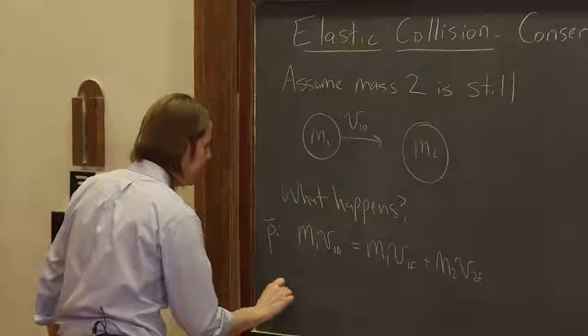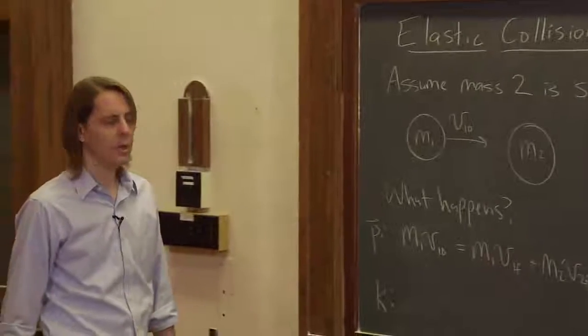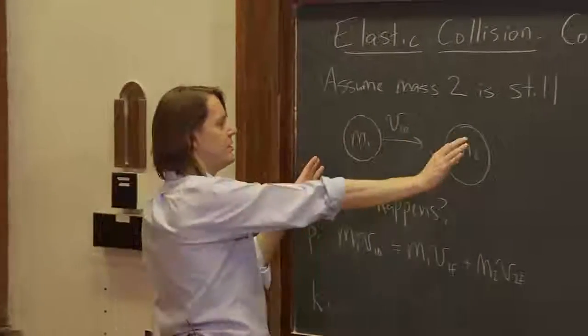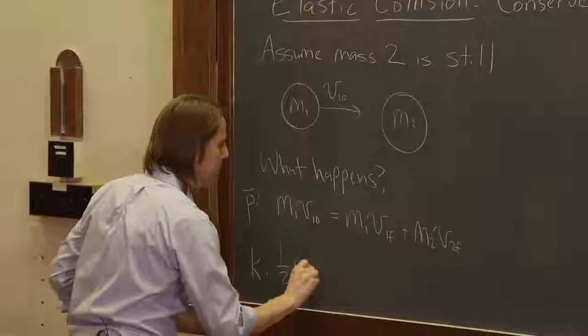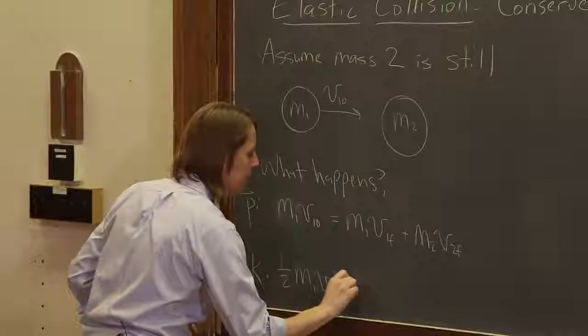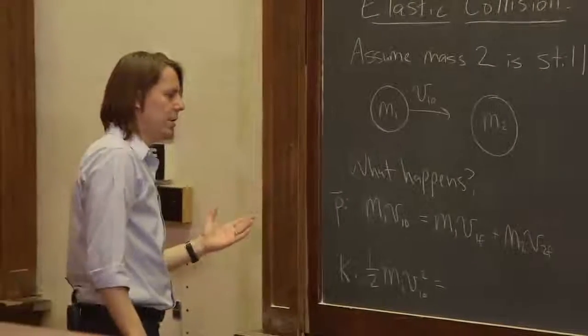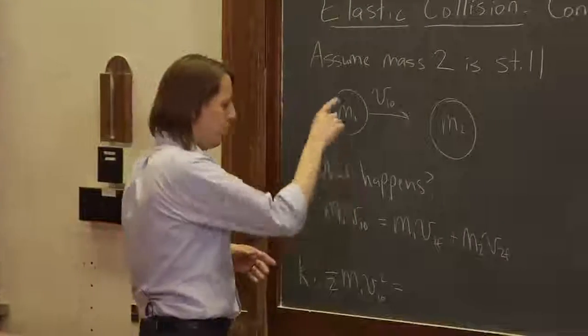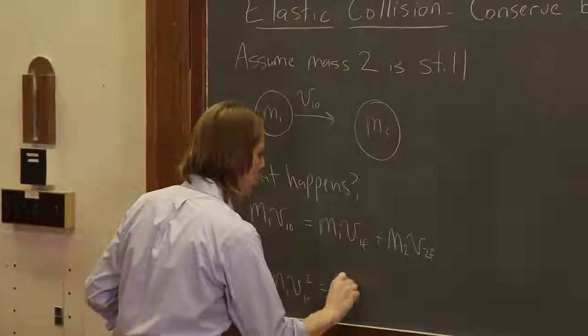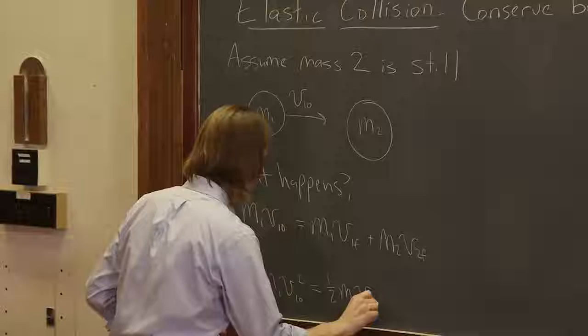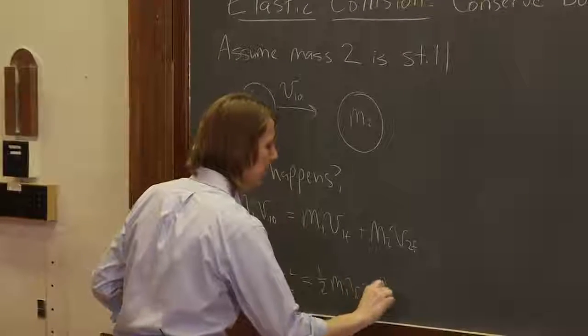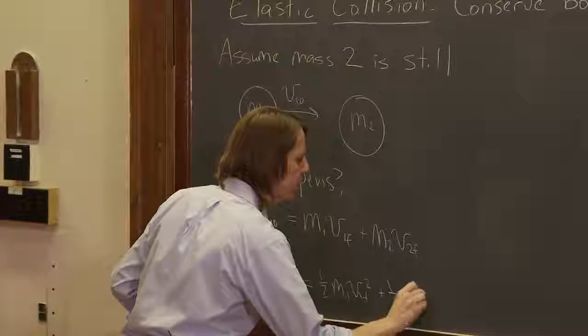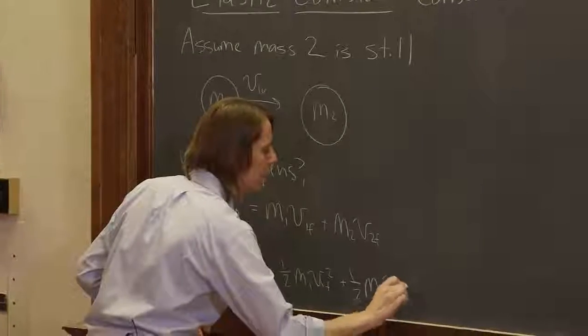So the kinetic energy initially, this has no kinetic energy, so it's one-half M1 V1 naught squared is the initial, and then the final is one-half M1 V1f squared plus one-half M2 V2f squared.